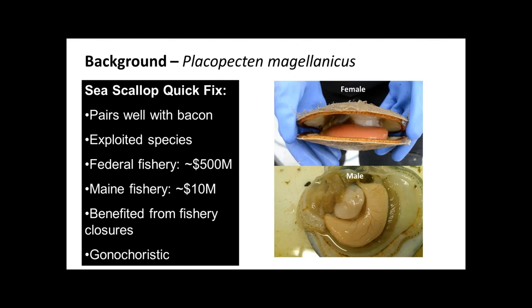The study system I spent seven years studying — PhD and beyond — is the sea scallop, or Placopecten magellanicus. Pairs very well with bacon, as pretty much everyone knows. Very heavily exploited — the federal fishery brings about 500 million dollars a year, doing pretty well, second or third in terms of fishery species. The Maine fishery brings in about 10 million dollars a year. Maine, I think, is the only state that has a sea scallop fishery at the moment, and it's benefited greatly from fishery closures on George's Bank. There's still a lot unknown about how reproduction plays into that equation.